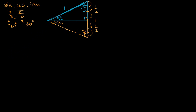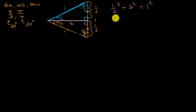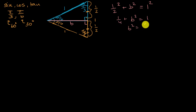That's useful for figuring out the remaining side length. Using the bottom right triangle and the Pythagorean theorem: one half squared plus b squared equals one squared. So one quarter plus b squared equals one, and subtracting one quarter from both sides gives b squared equals three quarters. Taking the principal root of both sides, we get b equals square root of three over two.